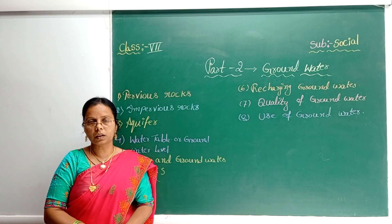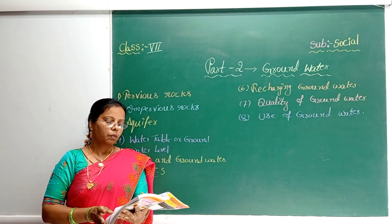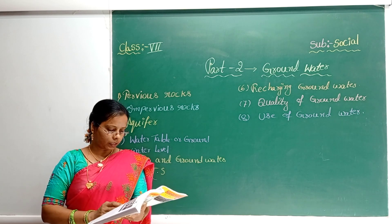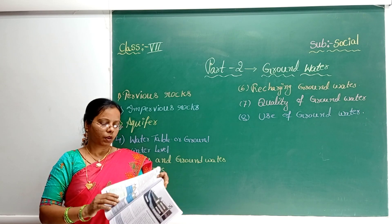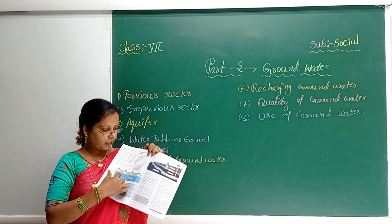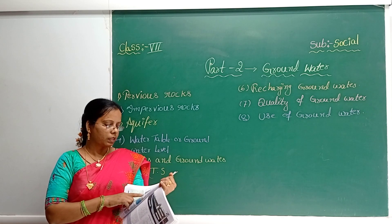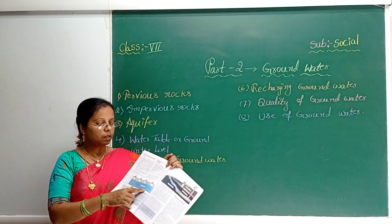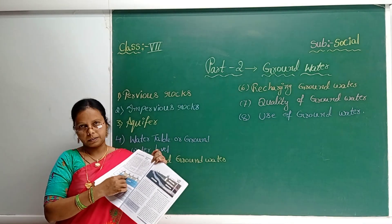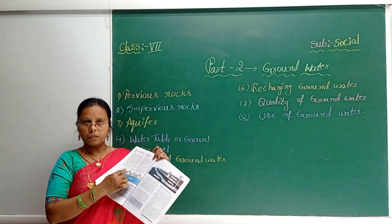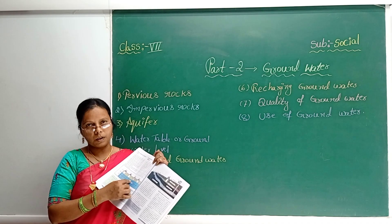Next we need to know about the water table. Take your textbook — on page number 28, there is a diagram of the water table or groundwater level. In this diagram, there are 4 wells, and these 4 wells have the same amount of water. These 4 wells have a depth of 5 meters, meaning the water level is the same or equal in all of them.